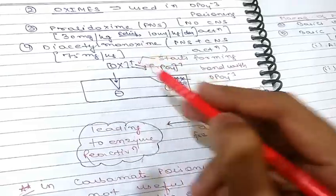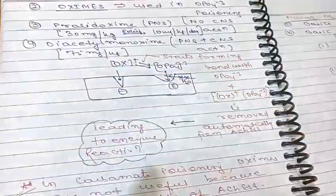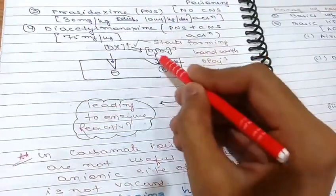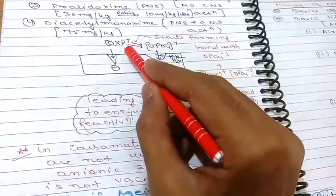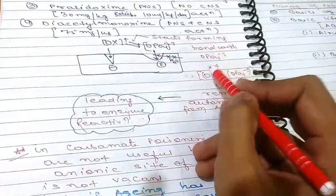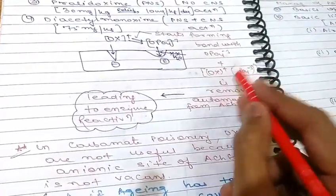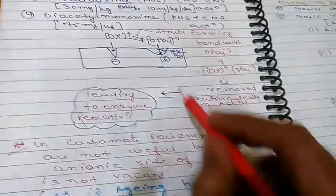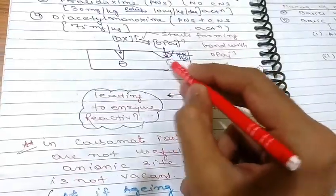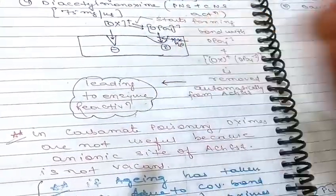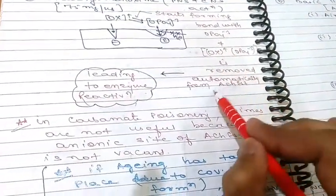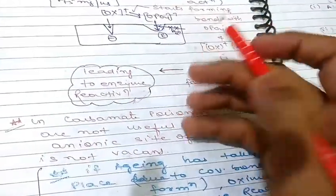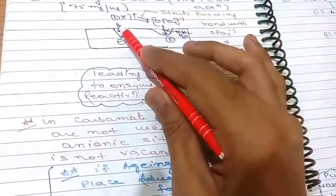The mechanism of oximes: if organophosphate is bound to the esteratic site of acetylcholinesterase, oxime attacks the anionic site — it starts forming a bond with the organophosphate, and after this bond forms, the organophosphate is removed from the esteratic site. The esteratic site is then free, resulting in enzymatic reactivation — acetylcholinesterase is reactivated. This is how oximes perform their action.